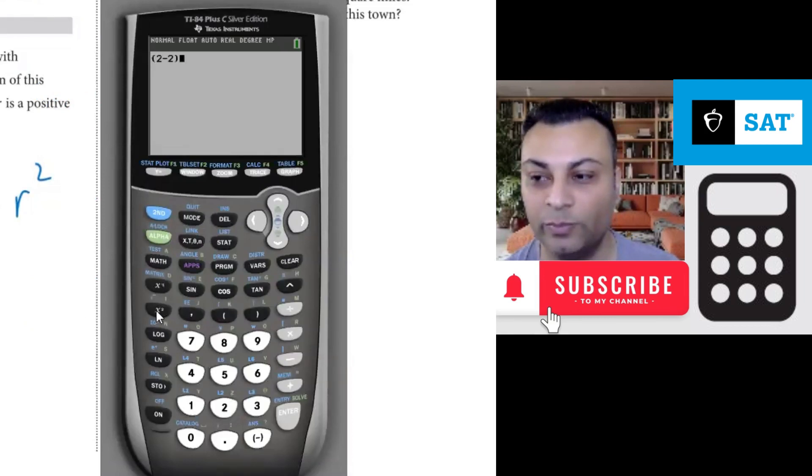Close the parenthesis. Squared. I know it's 0, but let's just keep going. 4 minus 9, close the parenthesis, squared. And you get 25.